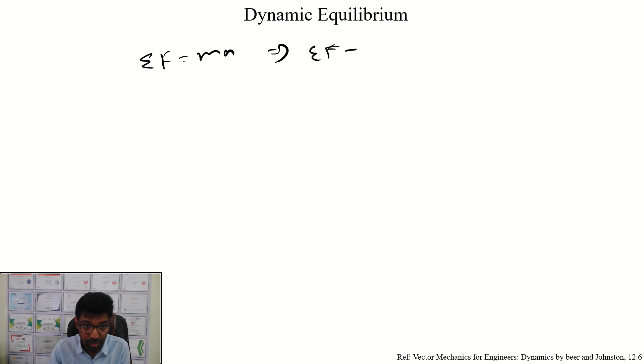Moving forward, we will talk about dynamic equilibrium. This could be interesting — dynamic equilibrium. We know that summation of F equals m·a. Now, if we move it forward: summation of force minus m·a equals zero.